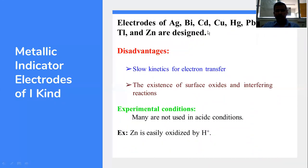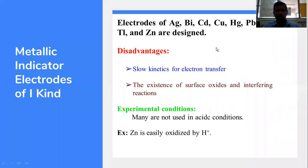Metals used to construct metallic indicator electrodes of the first kind include silver, bismuth, cadmium, copper, mercury, lead, tin, thallium, and zinc — whenever we want to determine the concentration of those ionic species in aqueous solutions. For silver ion, use a silver metal electrode; for lead ion, use lead metal as the electrode of the first kind.